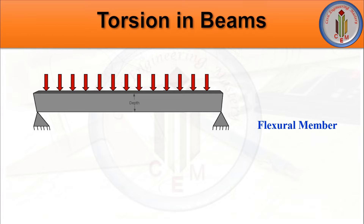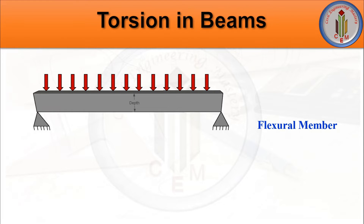Welcome back to Civil Engineering Mastery. Beam is one of the important structural members which carries the slab load and transfers it to the column. Beam is a flexural member - when load is applied, it tends to bend, developing bending moment and torsional moment. In some places we cannot ignore this torsional force. In this video, let's discuss in detail what is torsion, why torsion develops in beams, and what are the IS 456 recommendations for torsional force in beams.